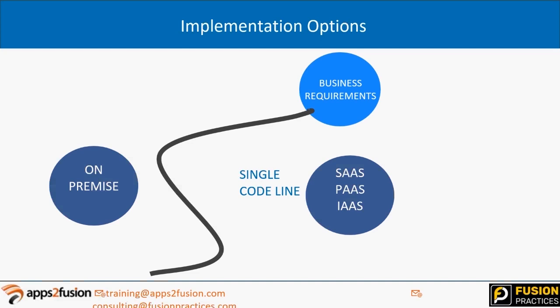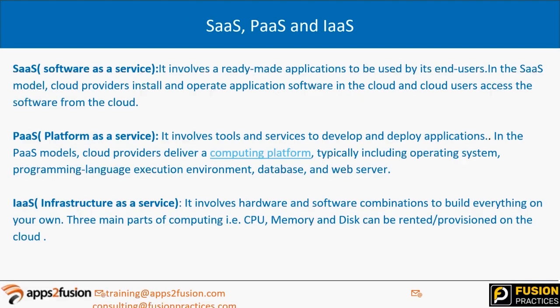SaaS, PaaS, and IaaS are all three cloud services. SaaS stands for Software as a Service, PaaS for Platform as a Service, and IaaS for Infrastructure as a Service. It depends on your business requirements — what kind of service and licensing you need from Oracle, and whether you need the hardware as well along with the application.